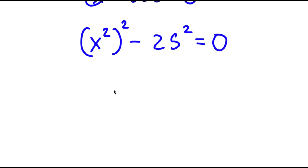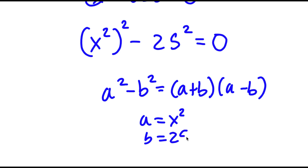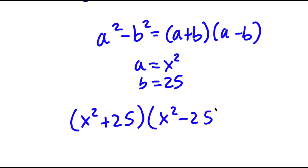Now, if I have something in the form a squared minus b squared, this is equal to a plus b times a minus b. So in this case, a is x squared and b is 25. So I have x squared plus 25 times x squared minus 25 is equal to 0.